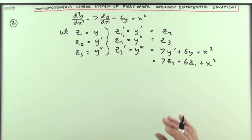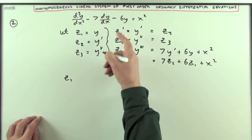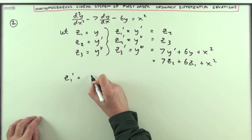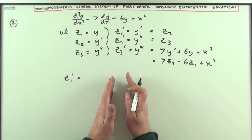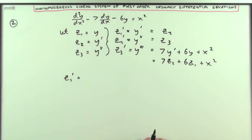And there's the system of three first order differential equations. I have z1 dashed equals z2. I think I'll set it out into the three separate functions I've got now, the z1, z2, z3, to form the matrix.